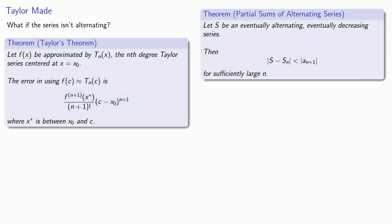So C is the value we're trying to approximate for, x zero is the center of our expansion, and x star is some number between x zero and C. In effect, if we add up the terms of our Taylor series to a certain point, the error is the next term with the derivative evaluated at some point x star instead of at x zero, the center of our expansion.